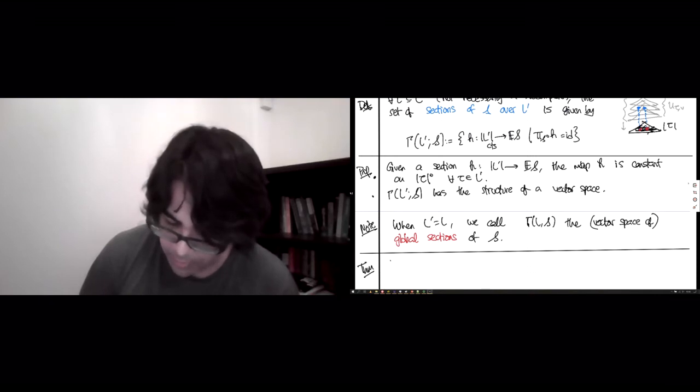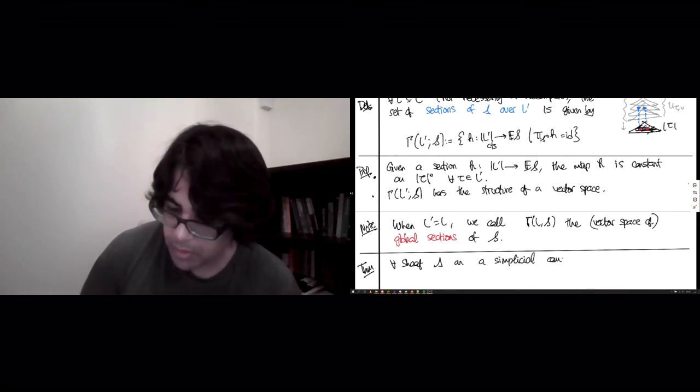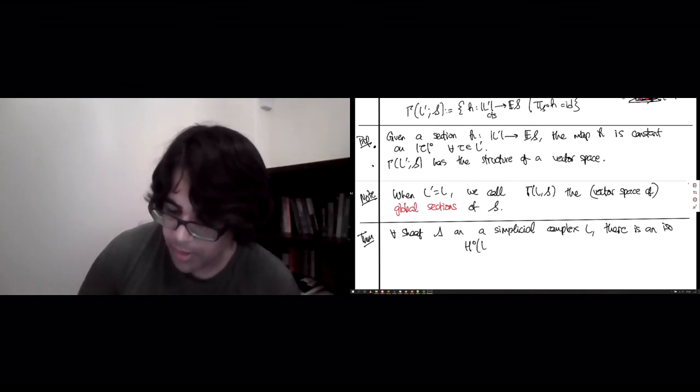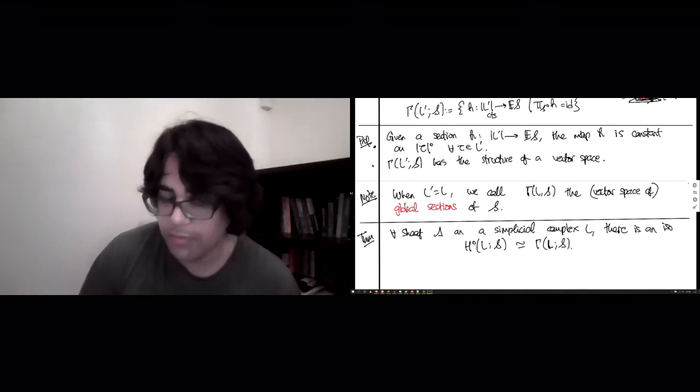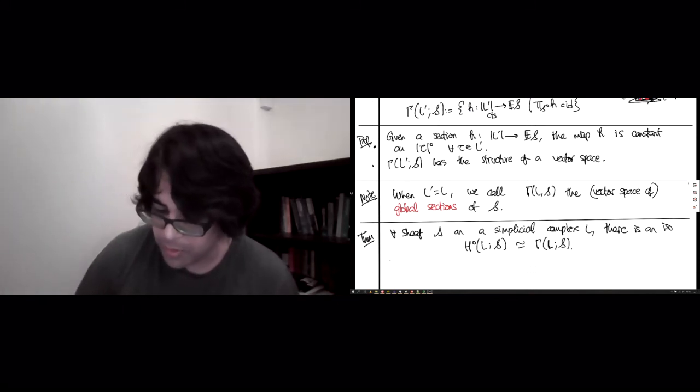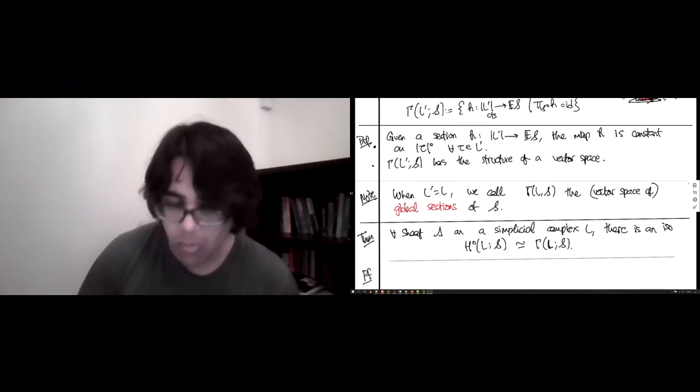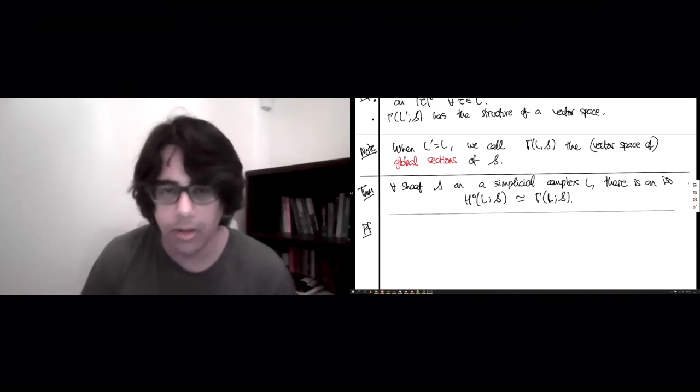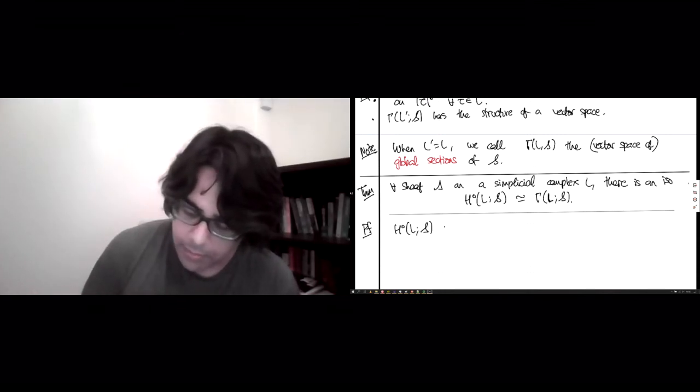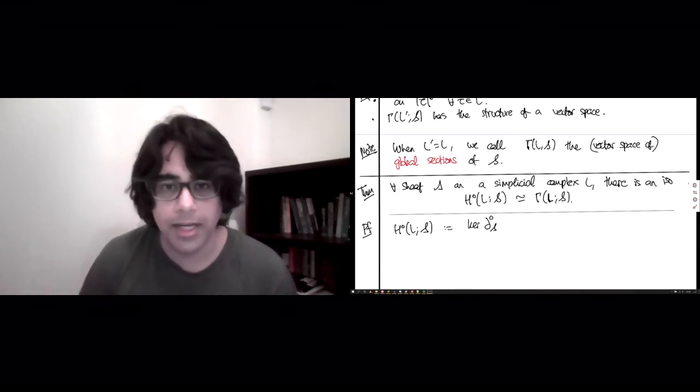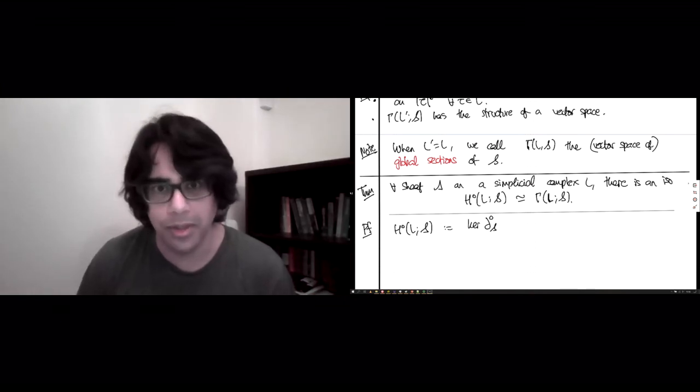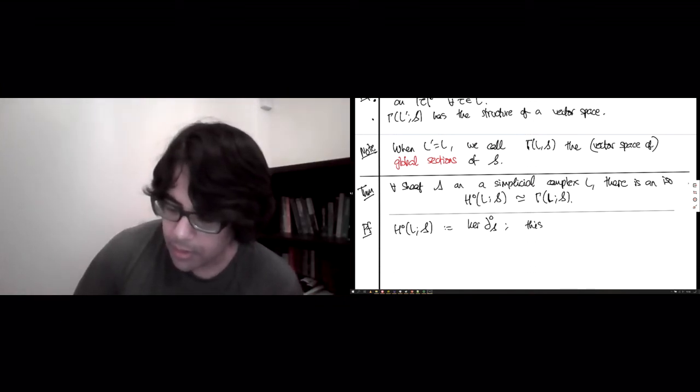And the reason we've been talking about sections and all of this is the following result, which states that for any sheaf s on a simplicial complex L, there is an isomorphism between the zeroth cohomology of L with coefficients in that sheaf and the space of global sections of that sheaf. And again, this one is an exercise, so I'm not going to prove it fully. But I want you to think about the following sort of initial step of the proof. So H0 is defined to be the kernel of the zeroth co-boundary map. And you should be quotienting it by an image, but the image of the thing you have to quotient it by is zero, so there's nothing to really quotient by.